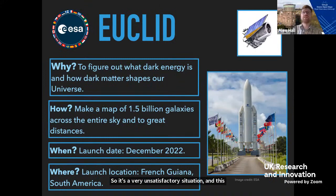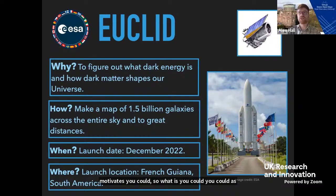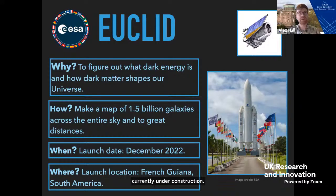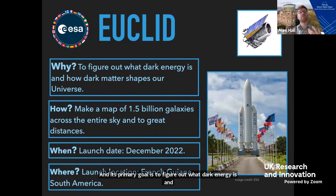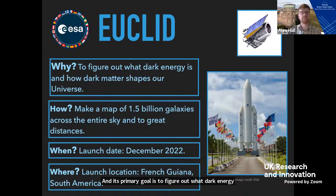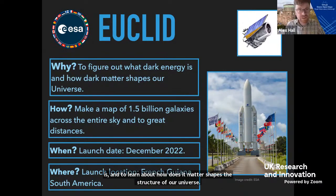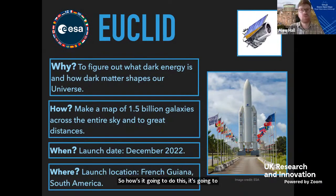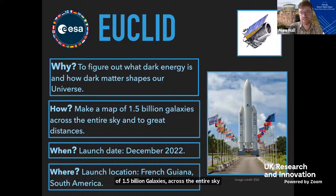This is a very unsatisfactory situation, and this motivates Euclid. Euclid is a European Space Agency telescope that is currently under construction. Its primary goal is to figure out what dark energy is and to learn about how dark matter shapes the structure of our universe. It's going to make a map of 1.5 billion galaxies across the entire sky and out to vast distances, looking at the universe when it was still relatively young.